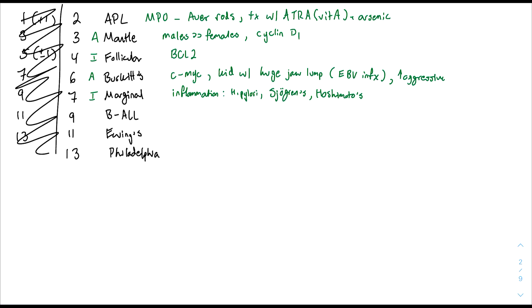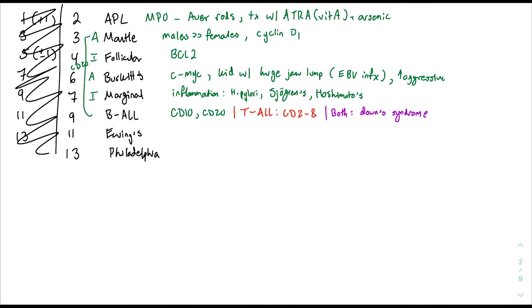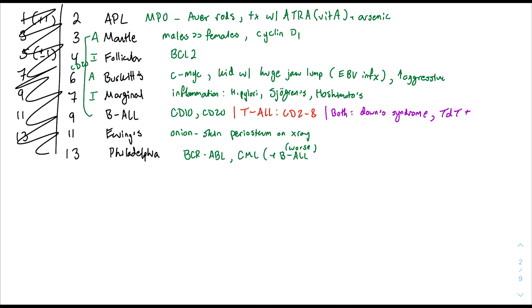B-ALL: think B10 Big 10 — CD10. All B-cell lymphomas also have CD20. T-ALL: CD2 through 8, the tiny. For both ALL types: 'all fall down' = Down syndrome, and 'all the damn time' = TdT positive. Ewing's: onion rings — onion skin periosteum. Philadelphia chromosome: BCR-ABL, CML, and also B-ALL with worst prognosis versus better prognosis for the t(12;21) B-ALL. Fusion kinase, treat with imatinib.